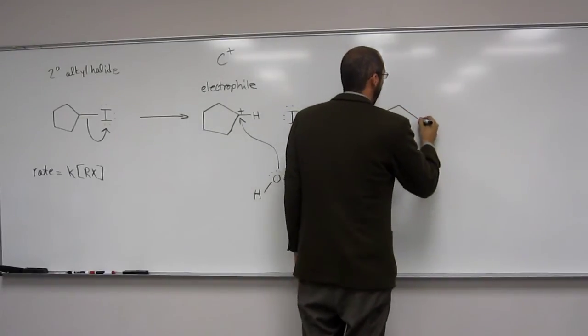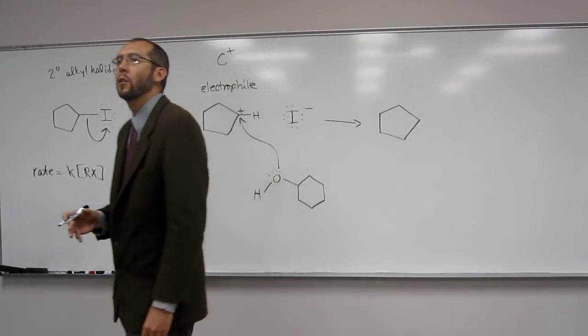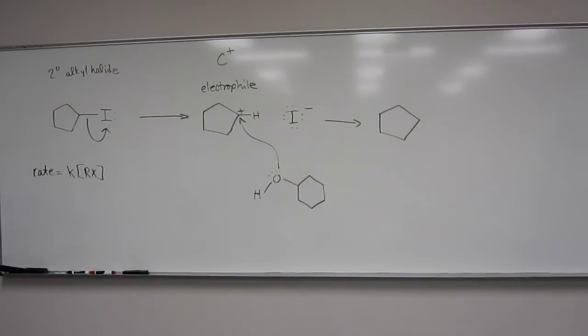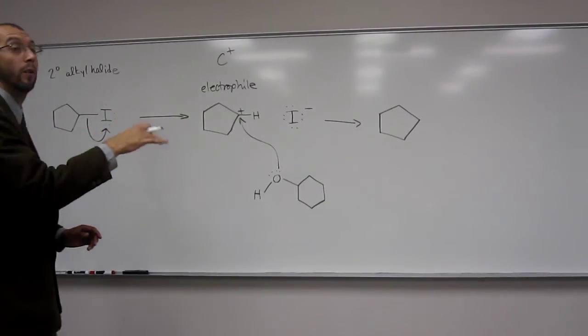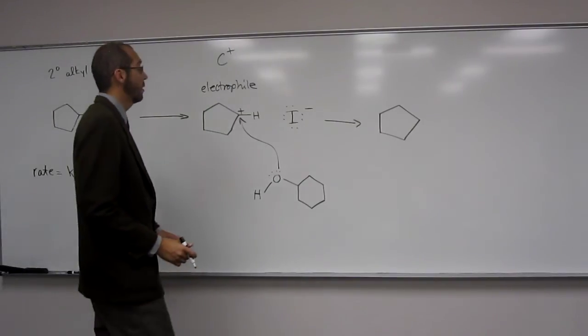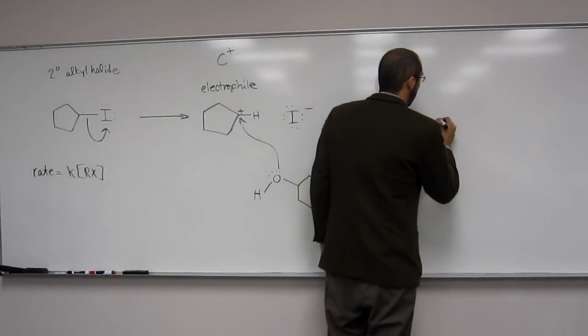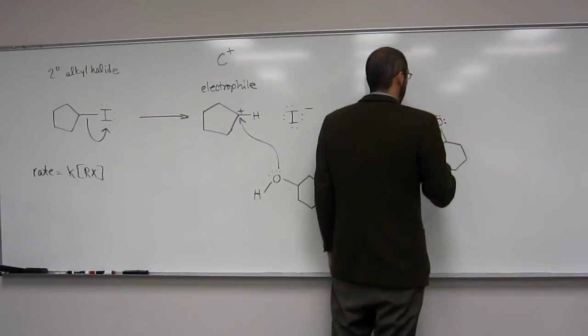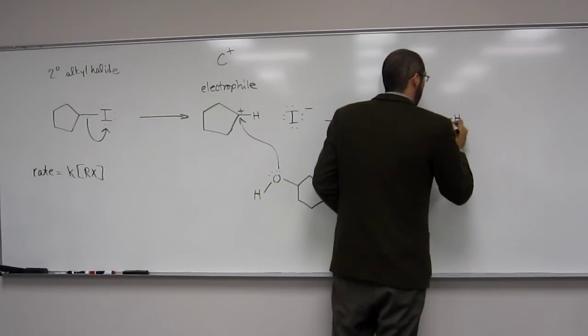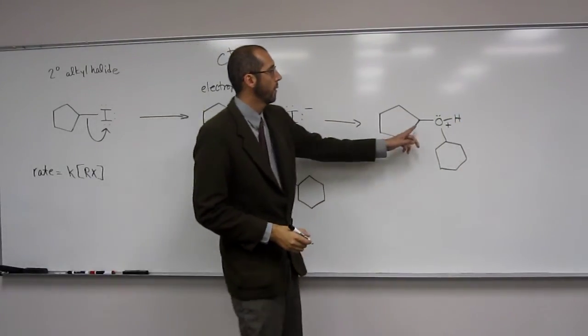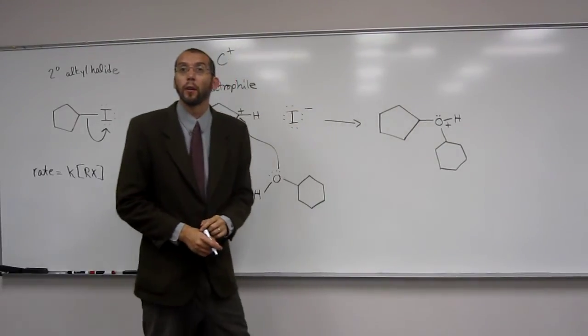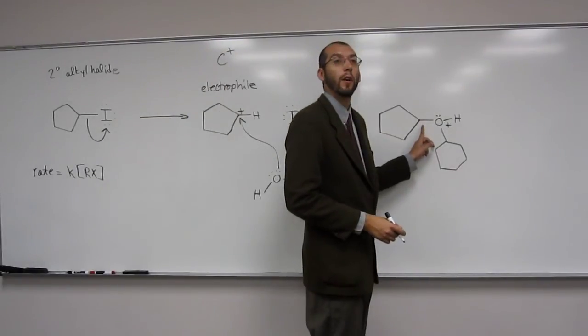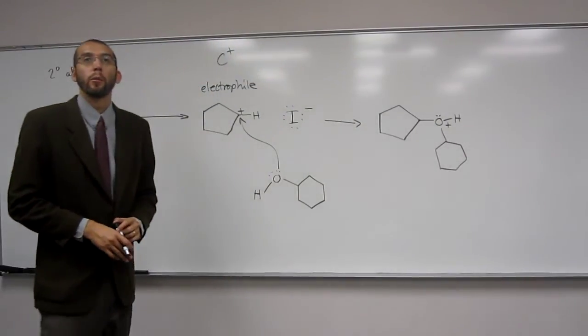Okay, so remember we said oftentimes you'll get two products from an SN1 reaction, right? Because it can attack from the front face or from the back face. Do you guys recall that? In this particular instance, are you going to get two products? No. Why not? It's achiral. Yeah. So the molecule that you're going to be forming is achiral because two of the groups that that carbon is attached to are the same thing, the two cyclopentane rings. If you want, you can still draw that hydrogen if it makes you feel more comfortable, no problem.